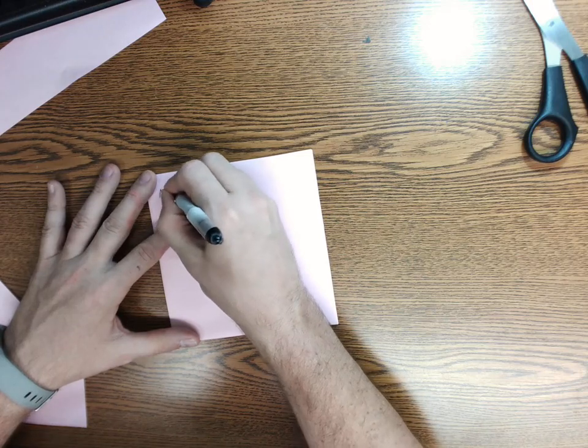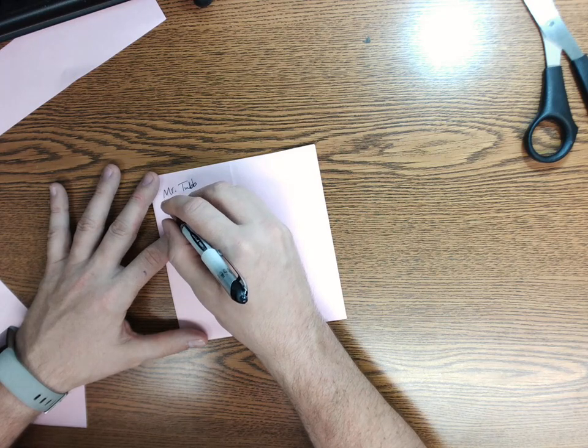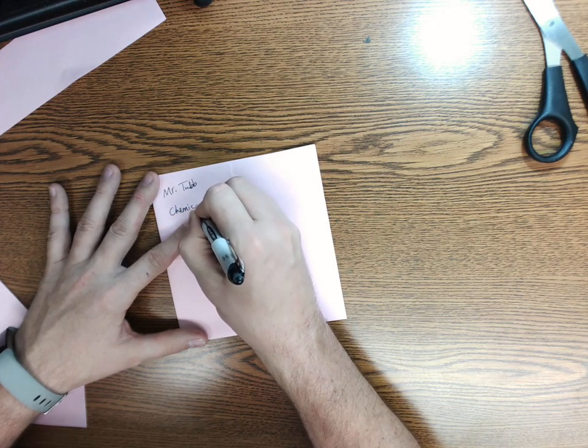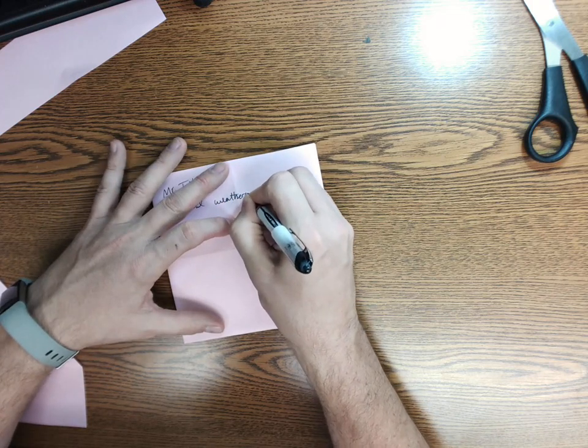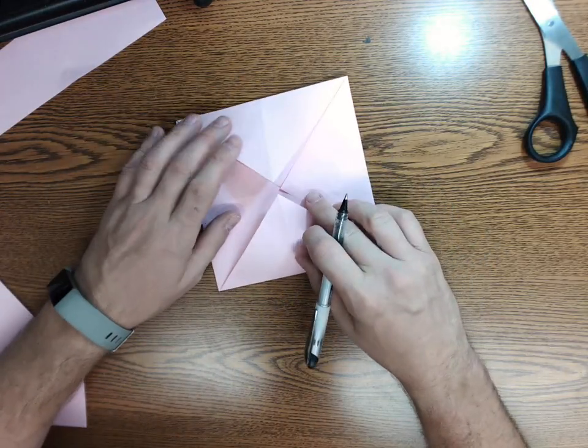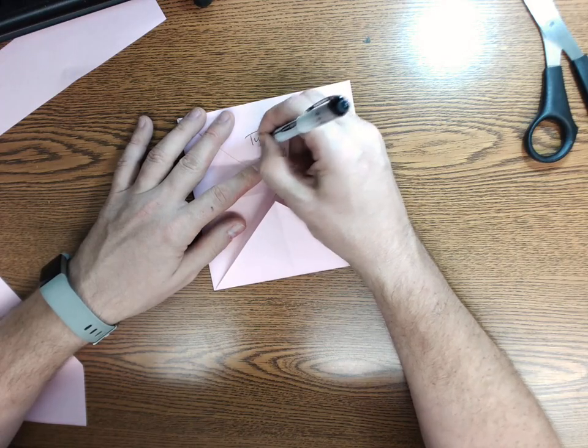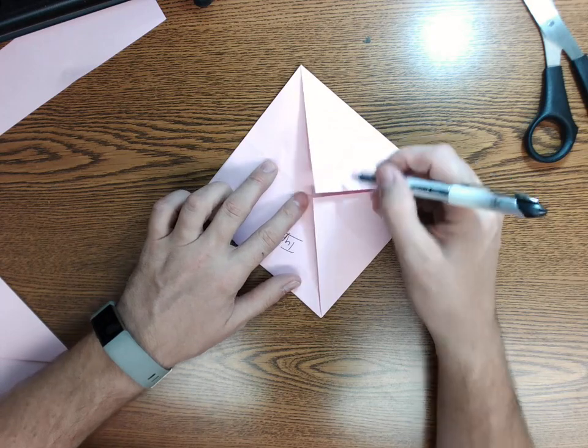So I'm going to put Mr. Tubb. That's my name. And then I'm going to put chemical weathering on the back. So then whenever I actually use this, I will put the type of chemical weathering here. So one type there, another type here, another type here, and so on.